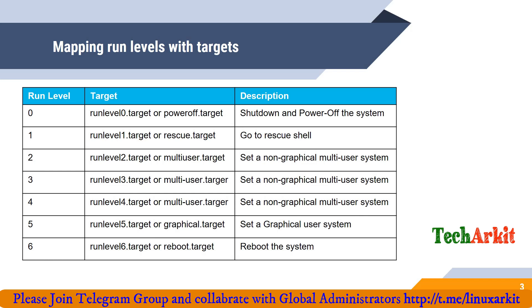Run level 2 target, multi-user target, run level 3, and run level 4 are non-graphical multi-user systems. For example, run level 3 uses the command-line interface with networking enabled, similar to previous versions. Run levels 2, 3, and 4 all work as CLI mode without a graphical user interface.